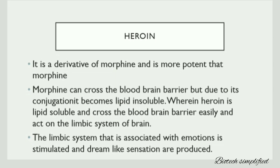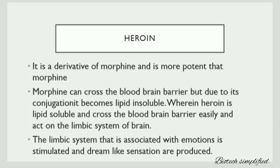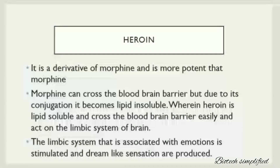Now let us discuss some of the phytochemicals in detail. First we will discuss heroin. Heroin is a derivative of morphine and is more potent than morphine. Morphine is lipid insoluble whereas heroin is lipid soluble. Since morphine is lipid insoluble, though it can cross the blood-brain barrier, it does so less readily than heroin.